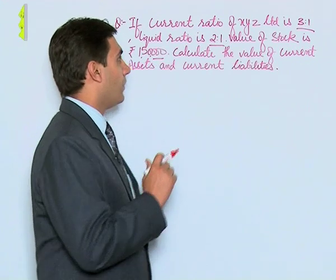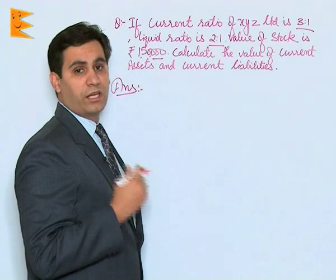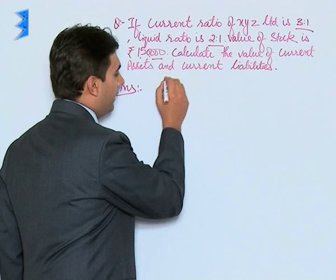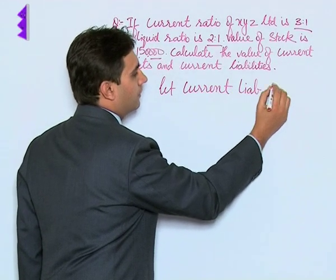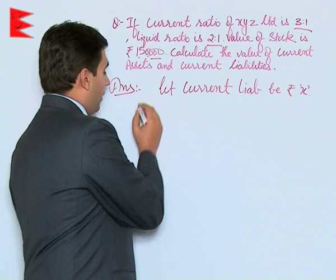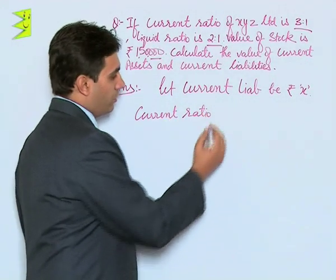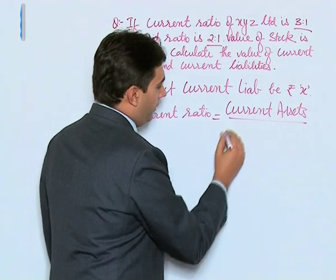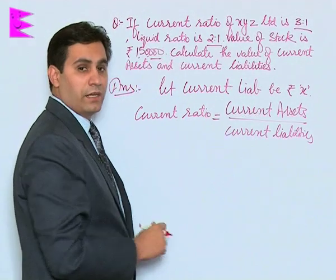Coming to the formula for current ratio: current ratio is equal to current assets upon current liabilities. Since both current assets and current liabilities are not given, let us assume current liabilities to be rupees X.